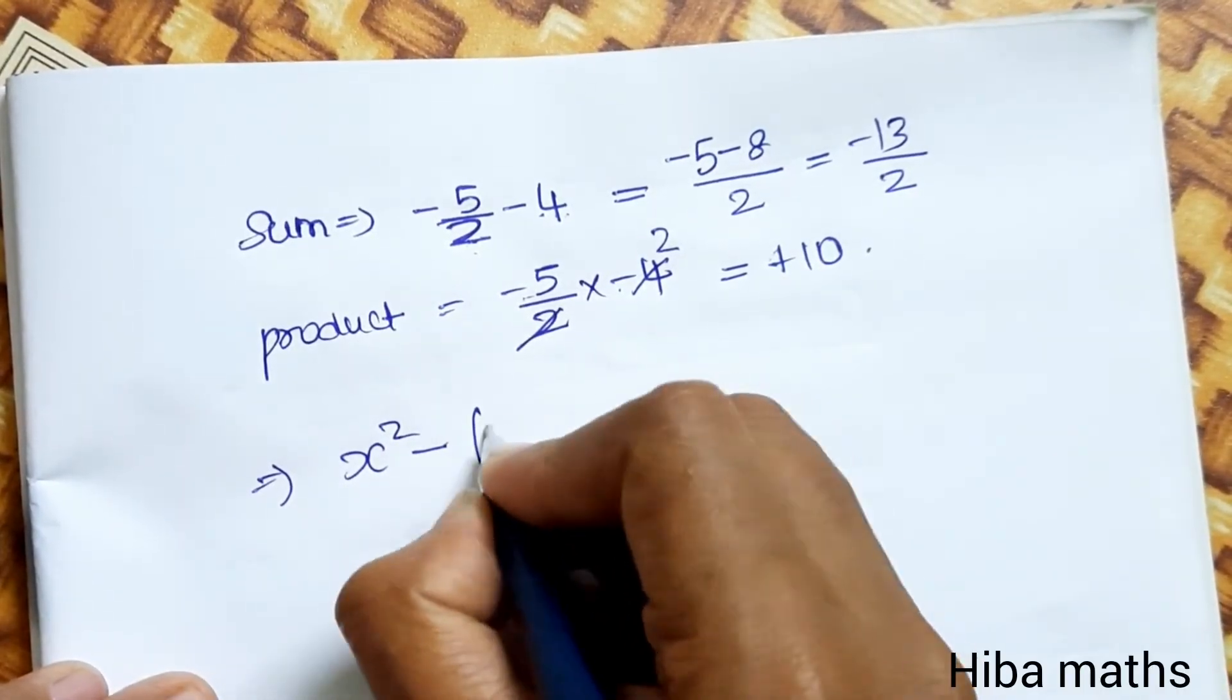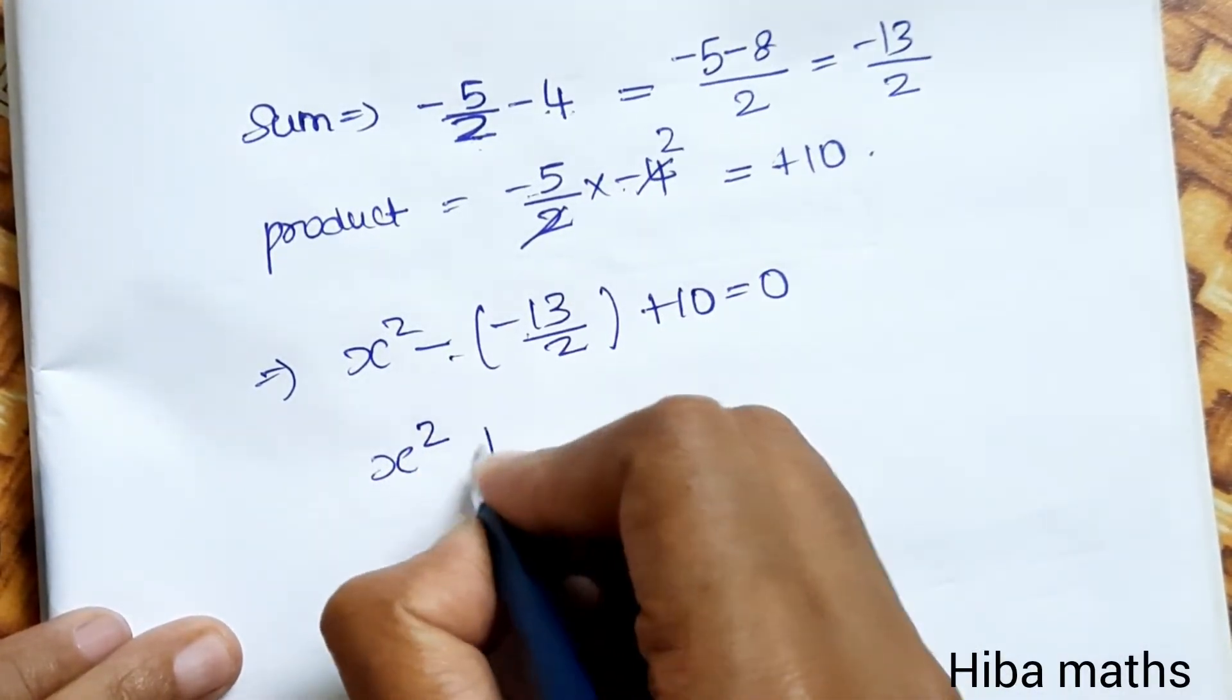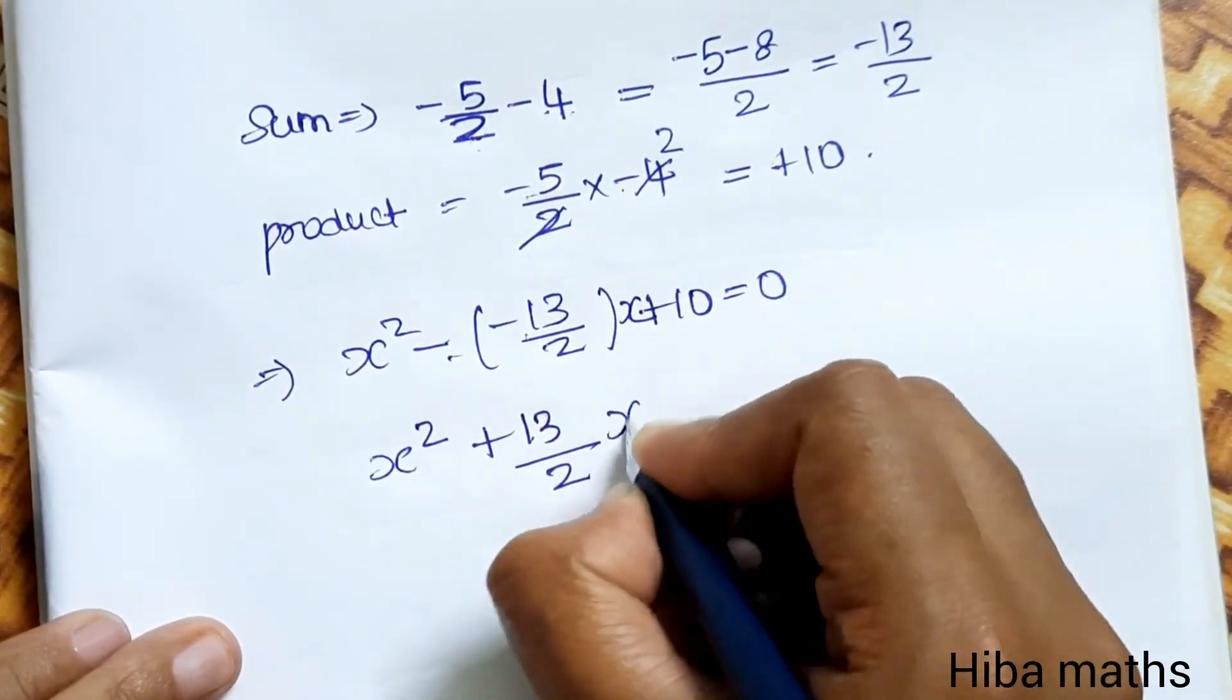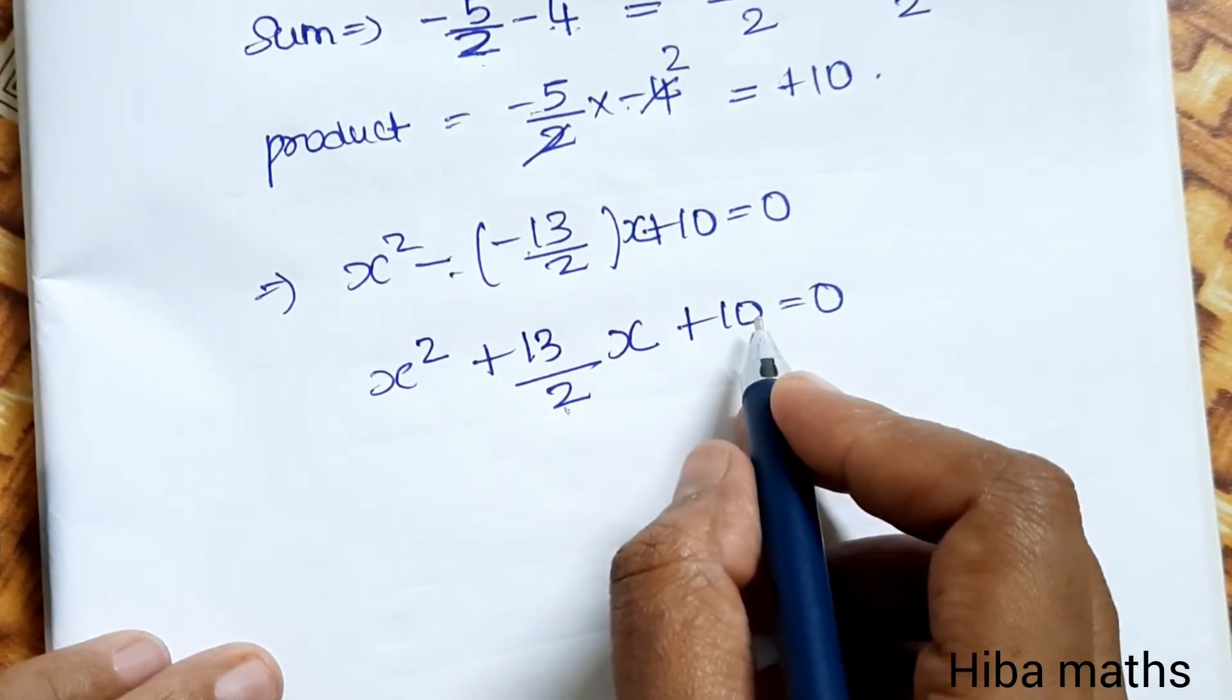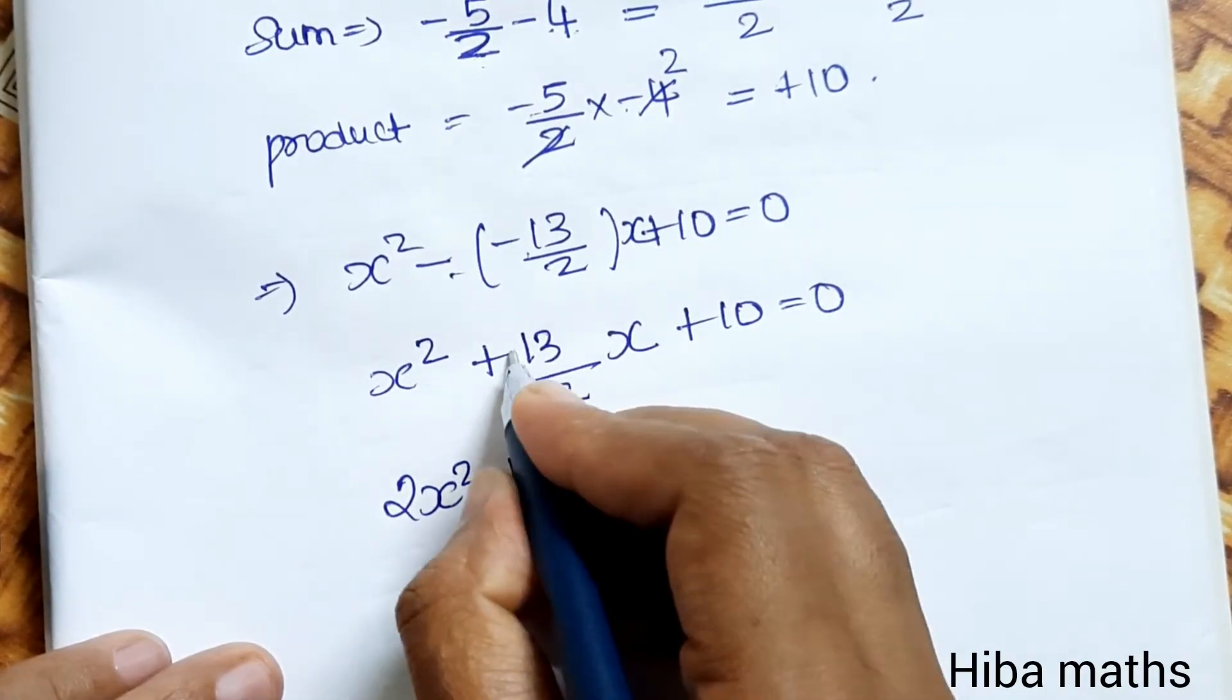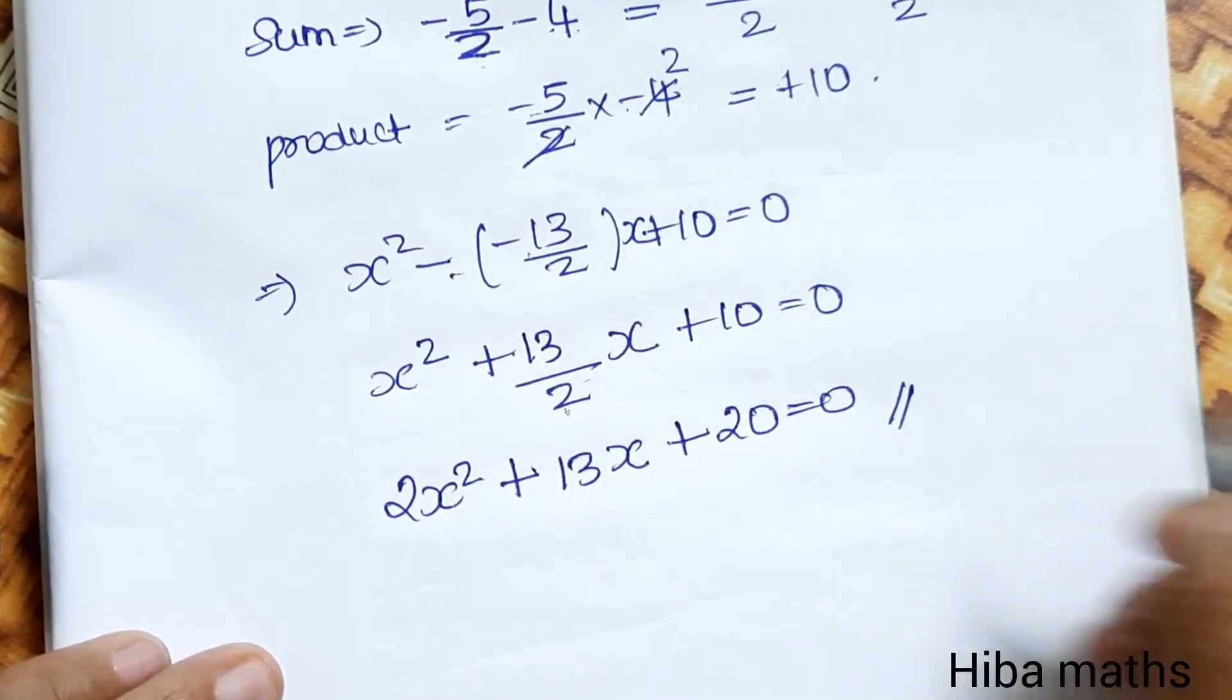Now we can substitute: x² - (-13/2)x + 10 = 0. So x² + 13/2 x + 10 = 0. That is the required equation.